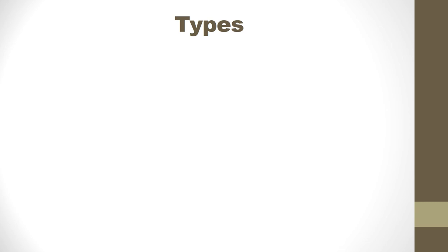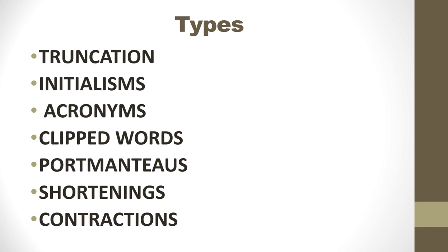Now I talk about the types of an abbreviation. There are seven possible types: the first is truncation, the second is initialism, the third is acronyms, the fourth is clipped words, the fifth is portmanteau, the sixth is shortenings, and the last type is contraction.